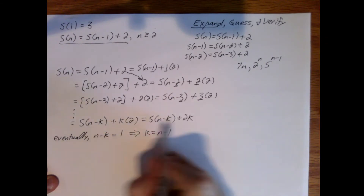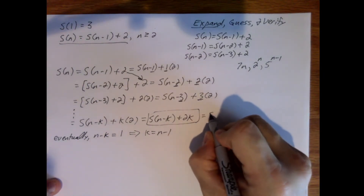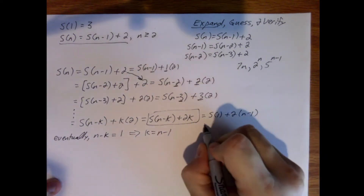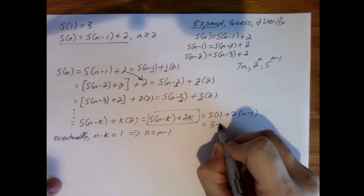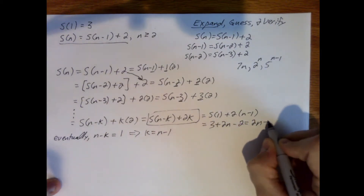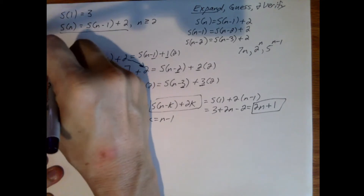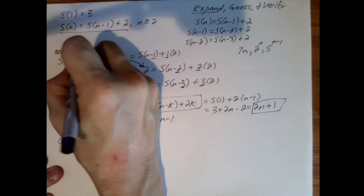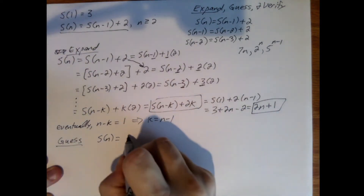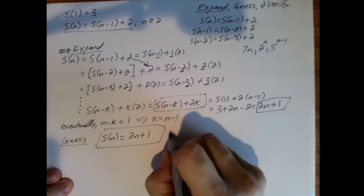Now I'm going to substitute into that relationship. This becomes s of 1 plus 2 times (n minus 1), which equals 3 plus 2n minus 2, which equals 2n plus 1. So my guess — this was the expand step — and the guess step is that s of n is equal to 2n plus 1. That's my guess at a closed-form solution.